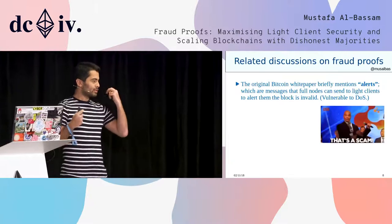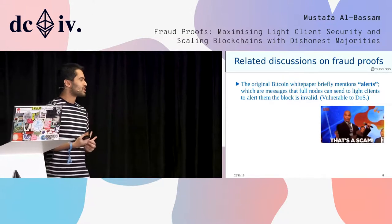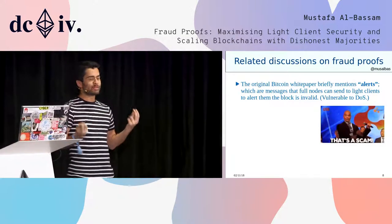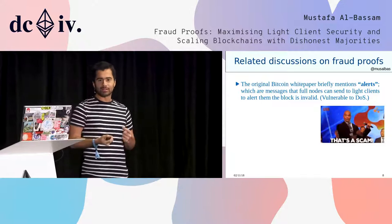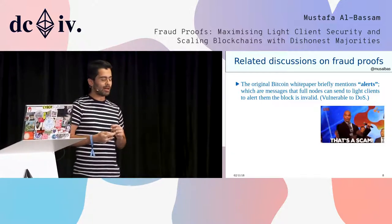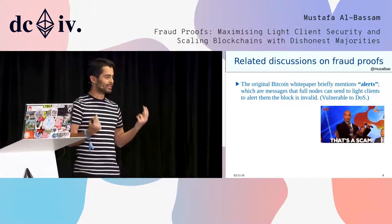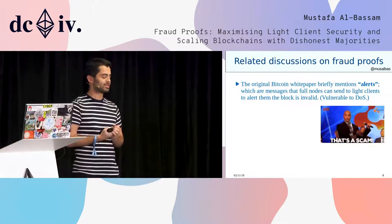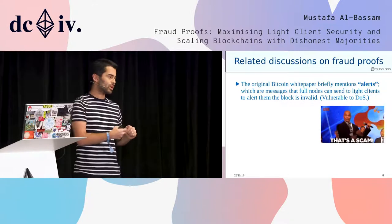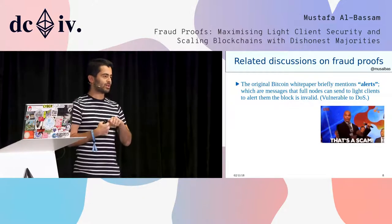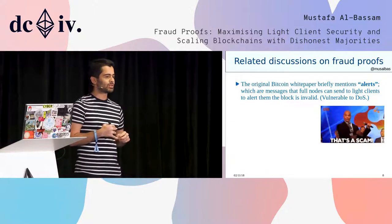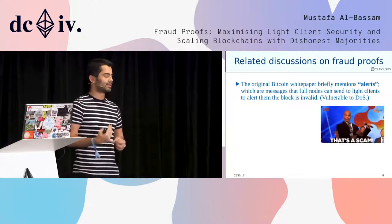The original Bitcoin white paper actually briefly mentions a concept like this called alerts, just in a single sentence. The idea of alerts, as Satoshi proposed them, was that a full node could send a light client a message to alert them that the block is invalid. That would cause the light client to have to re-download the block and validate that block again.